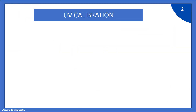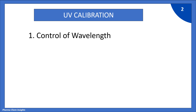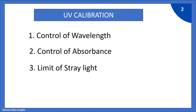For UV calibration, we perform 4 parameters. First is control of wavelength, second is control of absorbance, third is limit of stray light, and fourth is resolution power.